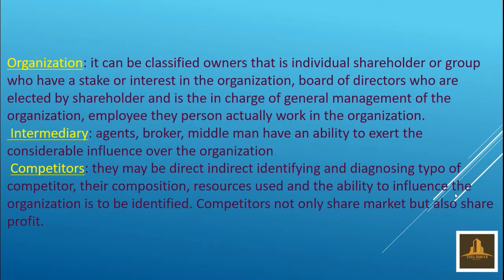The next element is Organization, which can be classified as: Owners — that is, individuals, shareholders, or groups who have a stake or interest in the organization; Board of Directors, who are elected by shareholders and are in charge of general management; and Employees, the persons who actually work in the organization. Next is Intermediaries — agents, brokers, and middlemen — who have the ability to exert considerable influence over the organization. Competitors may be direct or indirect; identifying and diagnosing the type of competitor, their composition, resources used, and ability to influence the organization is important.